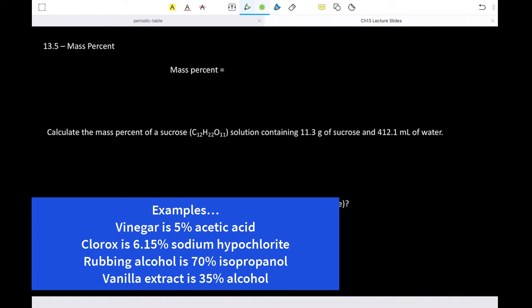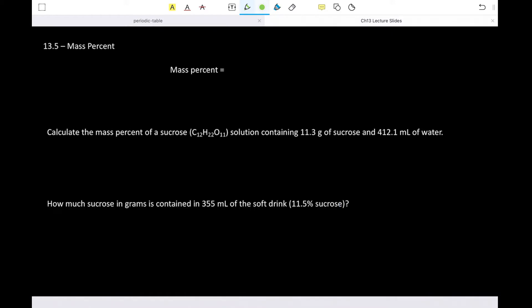Or like in the outline, some of the examples, parts per million and parts per billion. That's how the EPA, for example, lists the acceptable levels of certain compounds or elements or whatever in drinking water. What is the safe level? 10 parts per million or parts per billion.